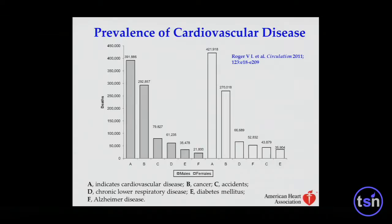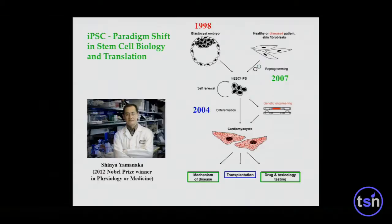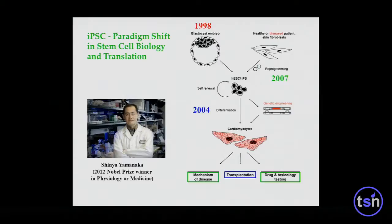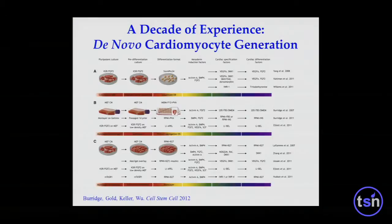Cardiovascular disease remains the number one cause of morbidity and mortality in the U.S., both for men and women — much higher than cancer, accidents, and other diseases. I've been at Stanford for about 10 years, since 2004. At that time, we were mainly interested in taking human ESCs, differentiating into cardiomyocytes, and using them for transplantation. When Yamanaka discovered you could take skin or blood and make iPS cells, it became a game changer — we can now make iPS cells from patients who have a disease to understand the disease mechanism and for drug discovery.